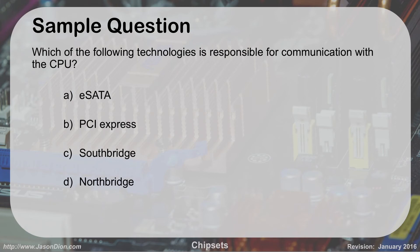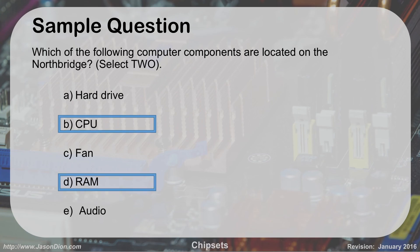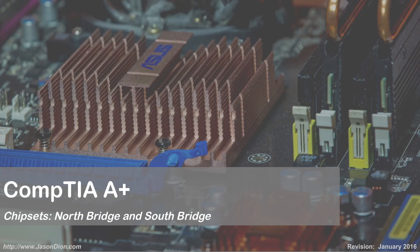When you see exam questions like 'what technology is responsible for communication with the CPU?' — the CPU is fast, therefore it talks to the North Bridge. Another question: 'Which computer components are located on the North Bridge — the hard drive, the CPU, the fan, the RAM, or the audio?' Your CPU and your RAM are fast components, so they're on the North Bridge. Your audio and your hard drive are considered input/output devices — they'll be on the I/O Controller Hub, also known as the South Bridge. And that's our chipsets.